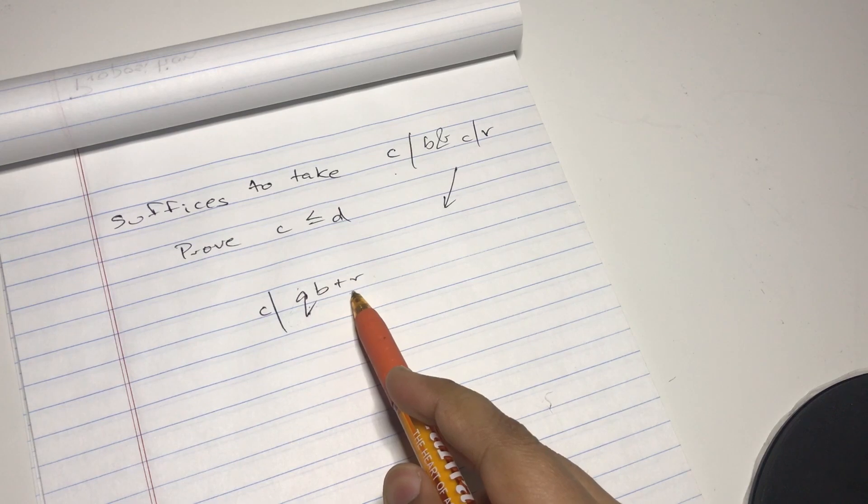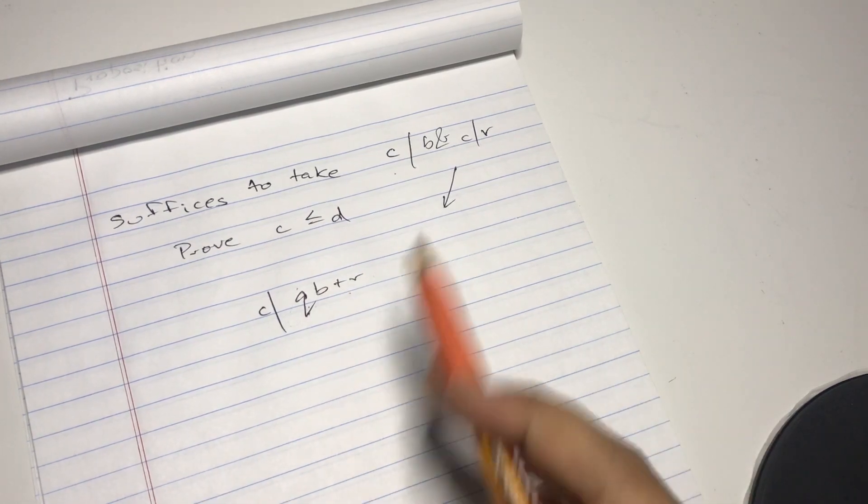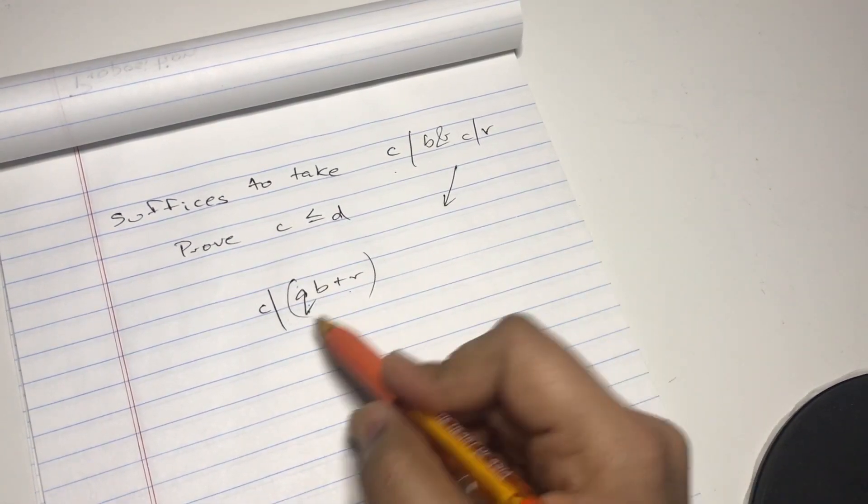As you know from the previous page. So yeah, and we took this for a specific reason because this equals a, right? Because a equals qb plus r.